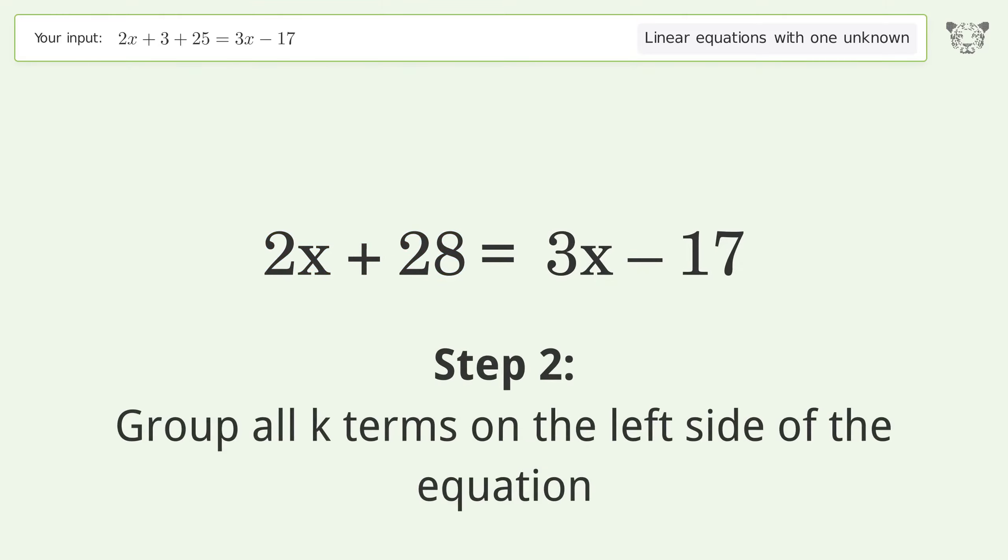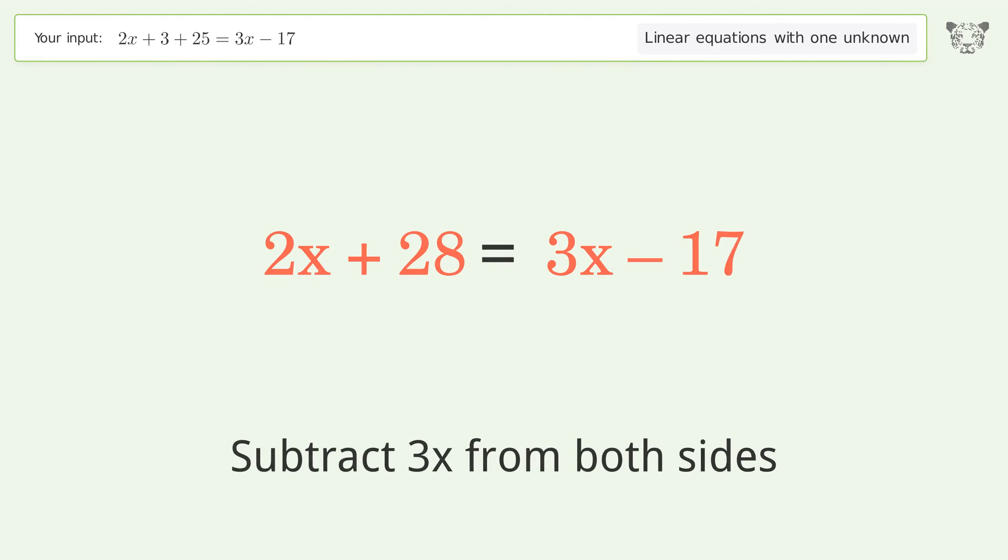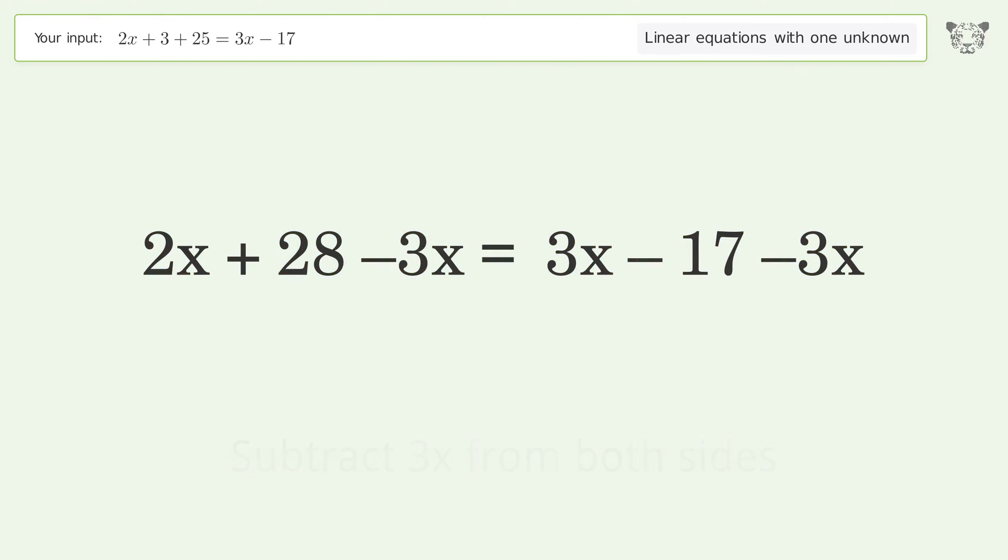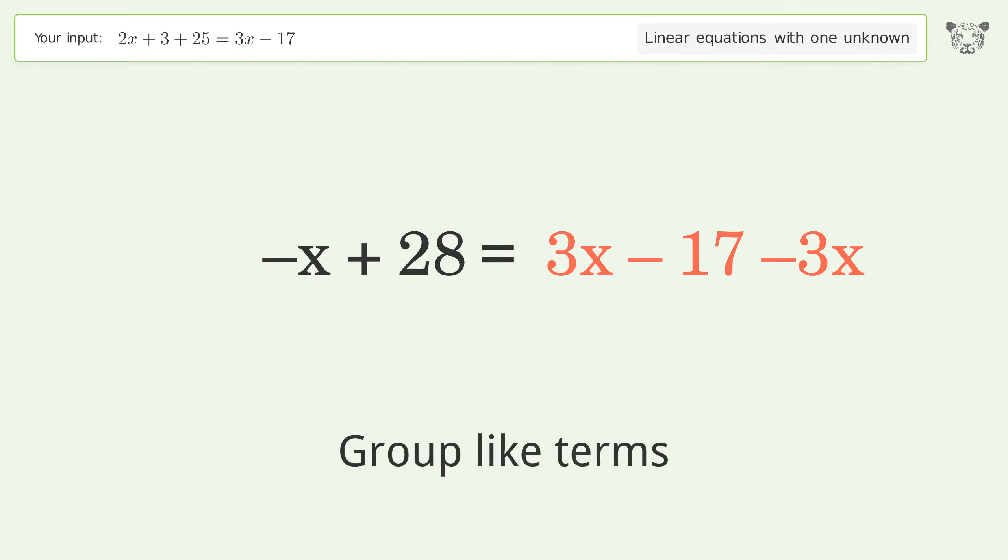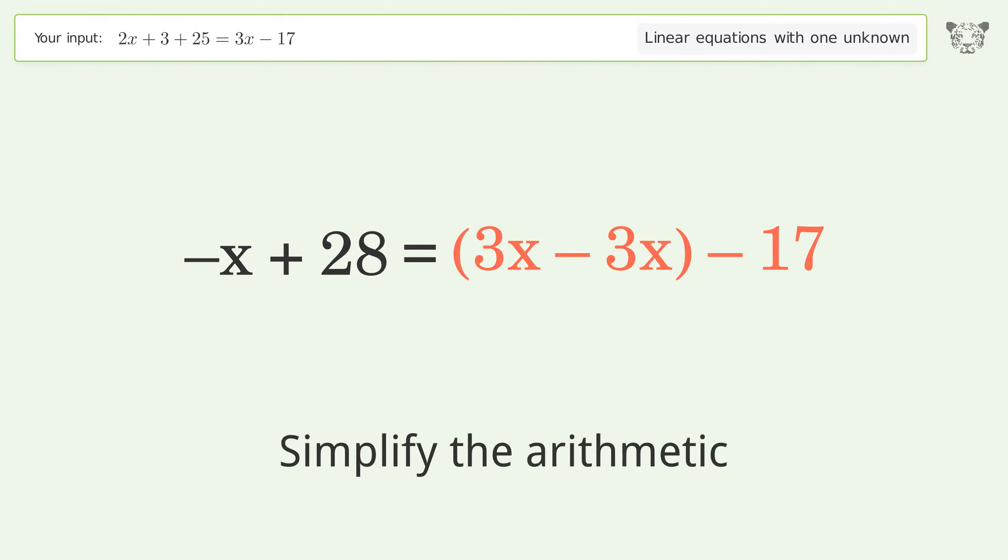Group all k terms on the left side of the equation. Subtract 3x from both sides. Group like terms. Simplify the arithmetic. Group like terms. Simplify the arithmetic.